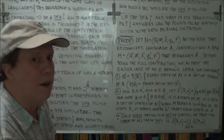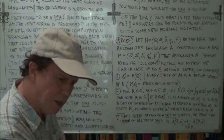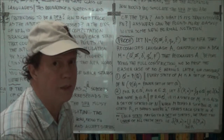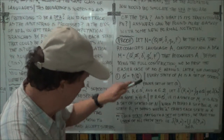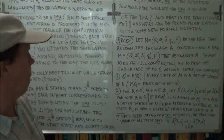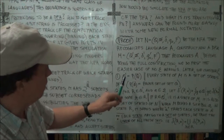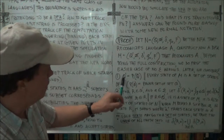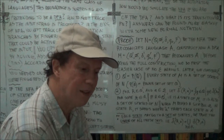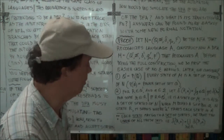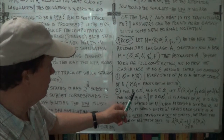Now here's where things get harder and more abstract. I'd ask you to really concentrate on this and play it over in your head until you really get it. Now remember, Q' is the power set — a state in your simulating DFA, your deterministic finite automaton, is a subset of Q.